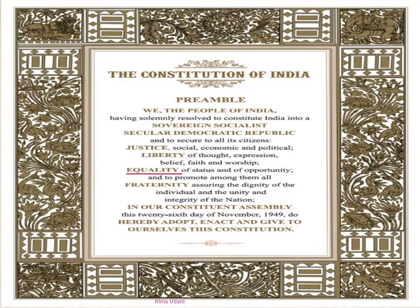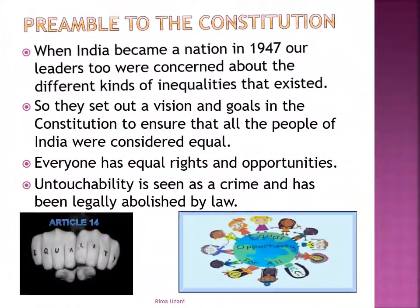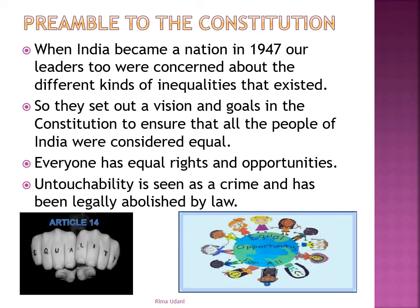What you see on your screen is the first page of our Indian Constitution, which clearly states that all Indians are entitled to equality of status and opportunity. It is known as the Preamble to the Constitution of India — a brief introductory statement that sets out guidelines for the people of the nation and presents the principles of the Constitution. When India became a nation in 1947, our leaders were worried about the different kinds of inequalities that existed in society. That is the reason they set a goal in the Constitution to ensure that the people of India were treated equally and everyone had equal rights and opportunities.